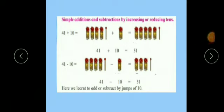Now children, see some examples here: simple addition and subtraction by increasing or reducing tens. First example is 41 plus 10. Now here, no need to start forward counting and no need to add these numbers. 41 plus 10, so 40 plus 10 is 50, so 41 plus 10 is 51. You can directly write it.